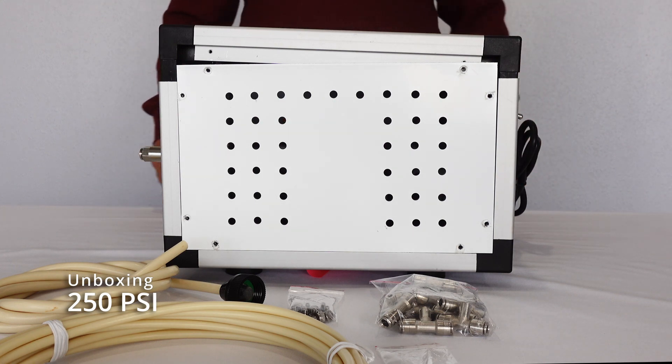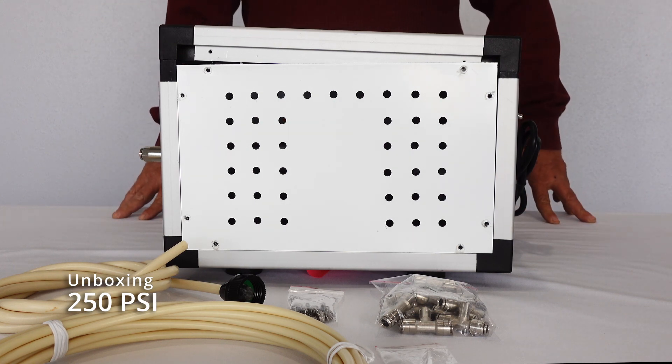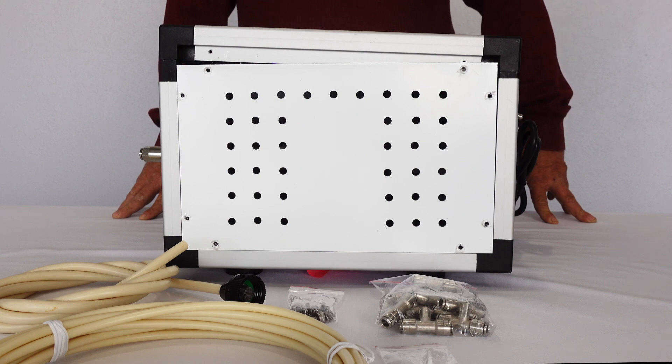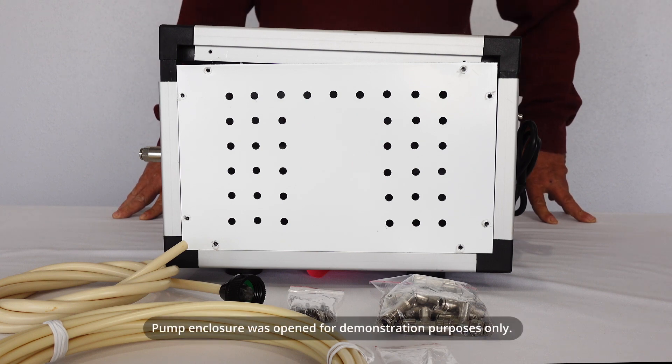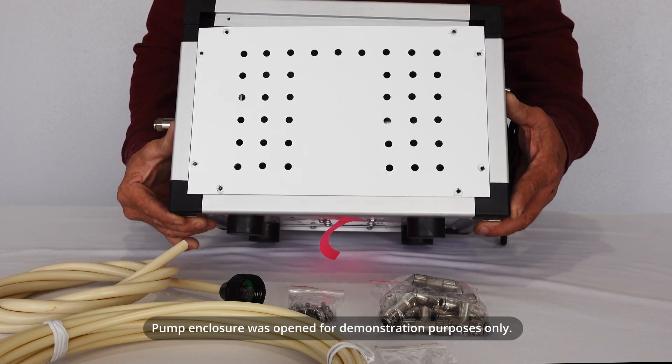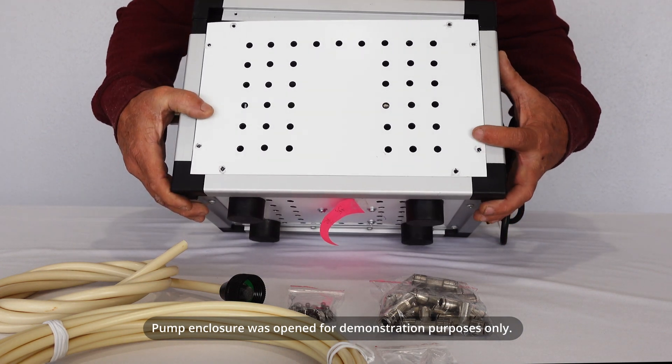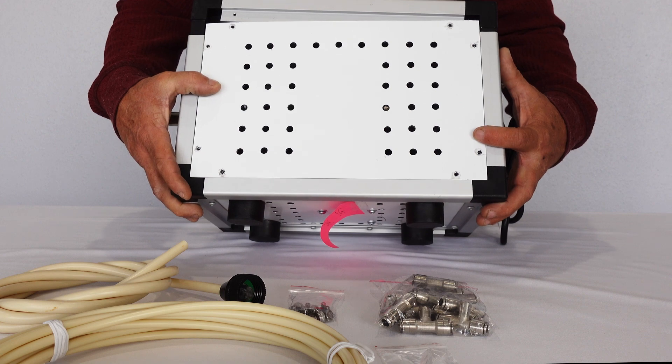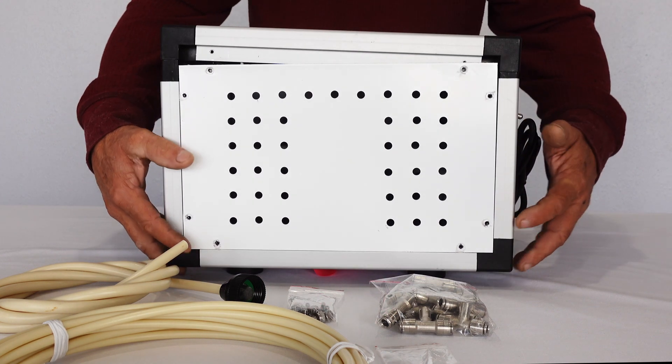We're going to show you what all comes in your 250 PSI misting kit. Take into mind your pump won't look this bad. This is just for demonstration purposes so I can take it apart and show you where the filter is.